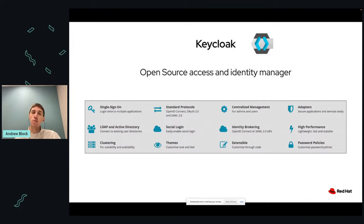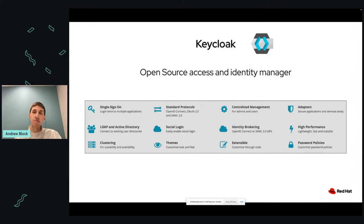KeyCloak is that open source access and identity manager that can allow you to federate all your identity needs from existing external sources, or you can use KeyCloak itself to manage your entire users. It's extensible — one of the best parts about being an open source project is not only can you use the base features, but you can also extend it using plugins and extension points. If you haven't used it, definitely check it out.